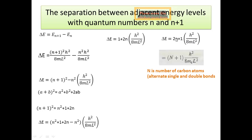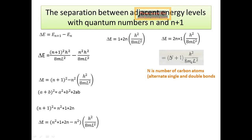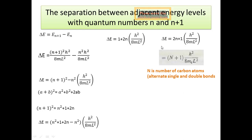Here, n represents the energy level from which the transition occurs, and n is also the number of carbon atoms if you have a long-chain molecule such as a hydrocarbon with alternating single and double bonds. You can substitute the total number of carbons into this equation to get the energy difference. I will explain this further in the coming lecture by working through an example with hydrocarbons, showing how to calculate the quantization of energy from one level to another.